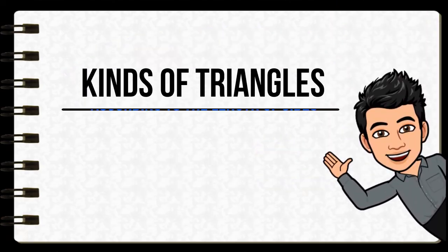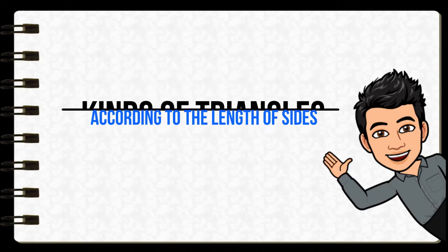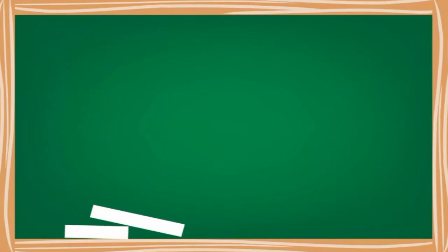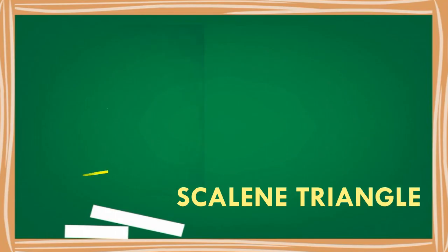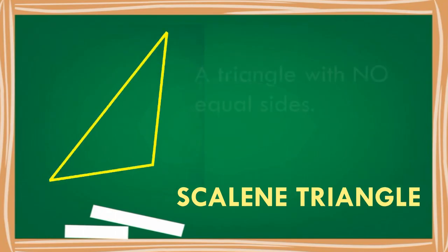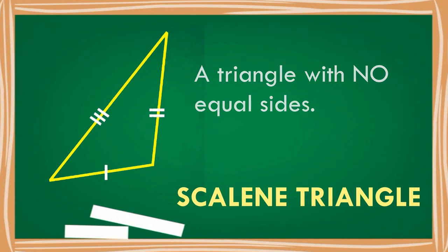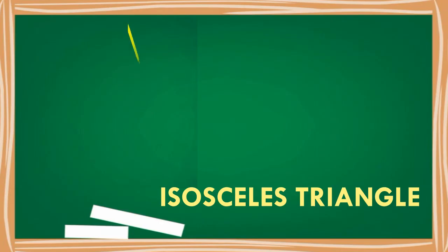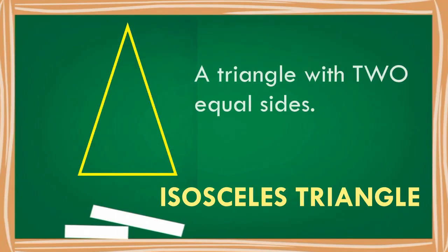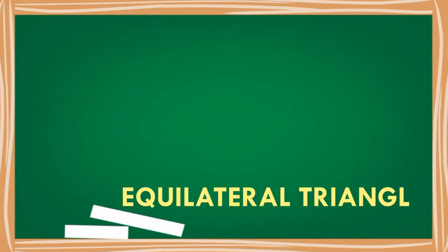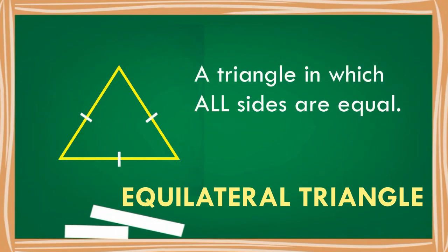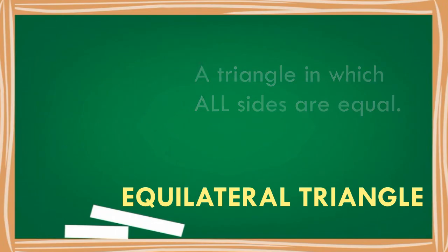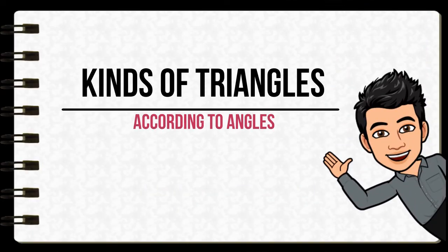There are kinds of triangles according to the length of sides. Let's look at them. Scalene triangle: a triangle with no sides that are equal. Isosceles triangle: a triangle with two equal sides. Equilateral triangle: a triangle where all sides are equal.